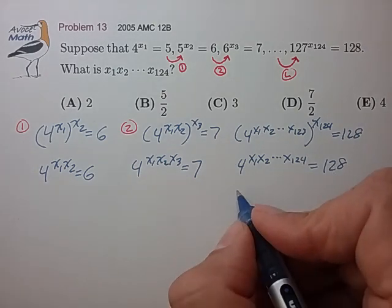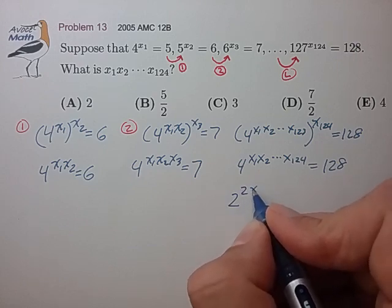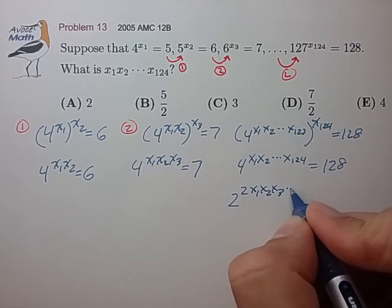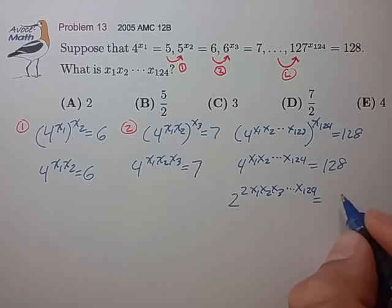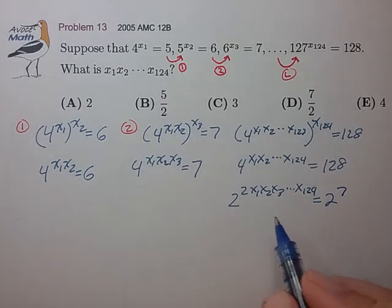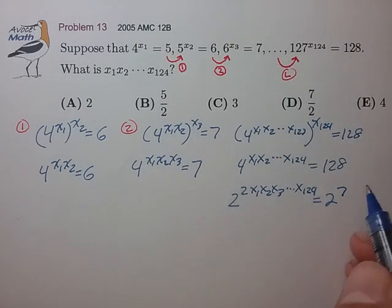Let's push it in that direction and substitute 4 for 2 squared, and 128 is 2 to the 7th. Great, we have the same exponent base, so the exponents have to be equal. That gives us 2 times x1 x2 through x124 equals 7.